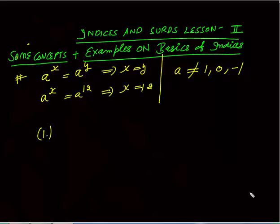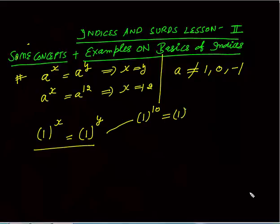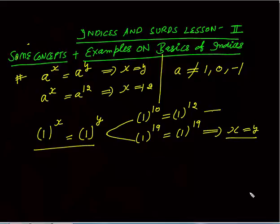For example, when I say 1^x = 1^y, x and y may or may not be equal, but these two sides are always equal — 1^x is always equal to 1^y whatever the values of x and y. For instance, 1^10 = 1^12, where x and y are not equal (10 ≠ 12), and 1^19 = 1^19, where x and y are equal.